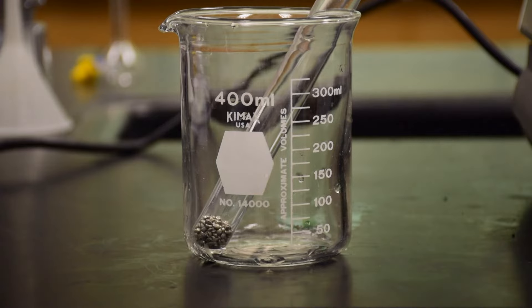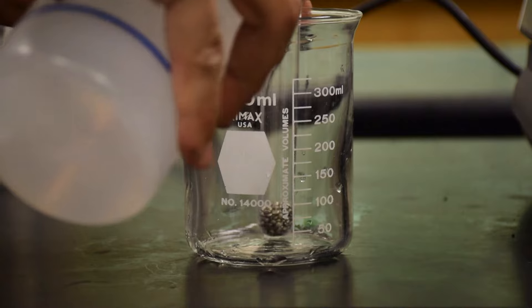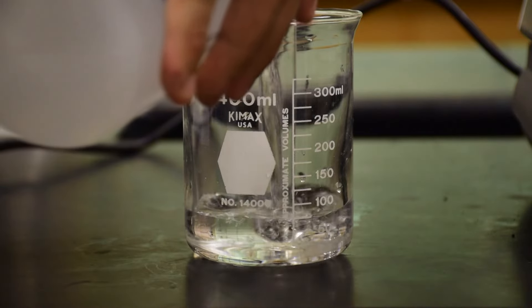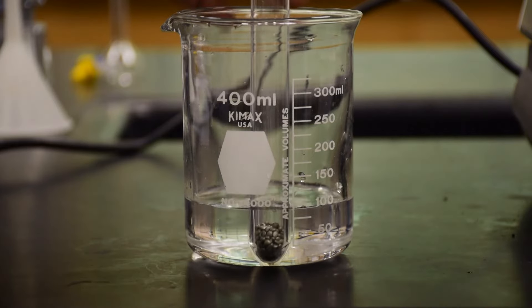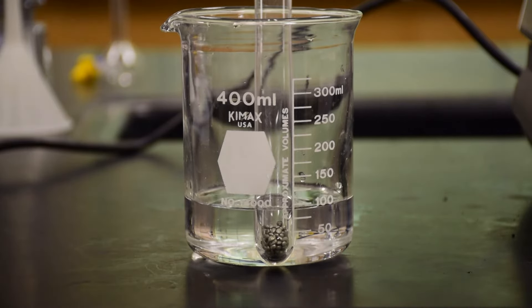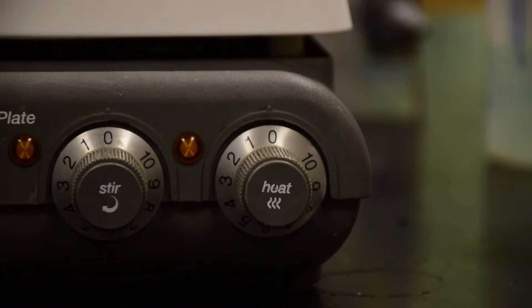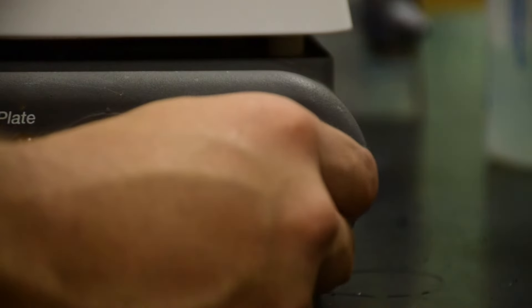Then you want to get a 400 milliliter beaker and fill it with water up to above the level of the metal in the test tube. Then, turn on the hot plate to a level of 7 to 8 and boil the water.